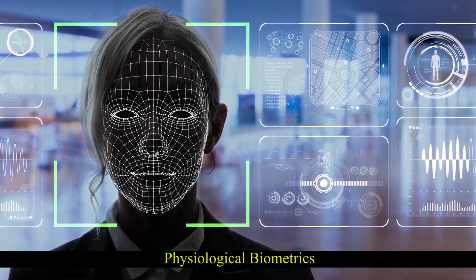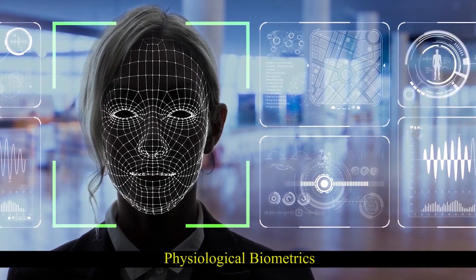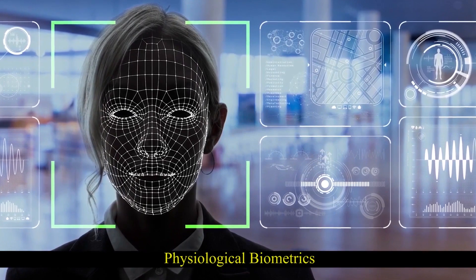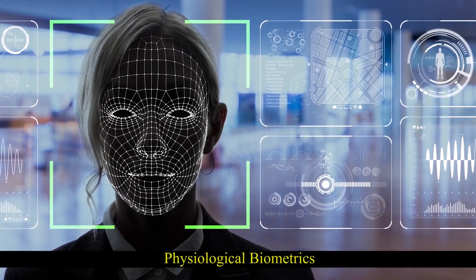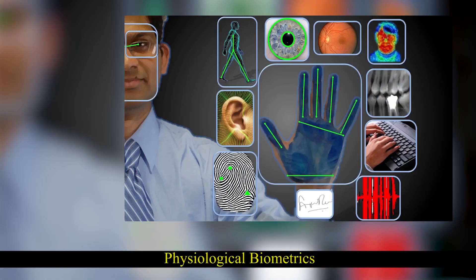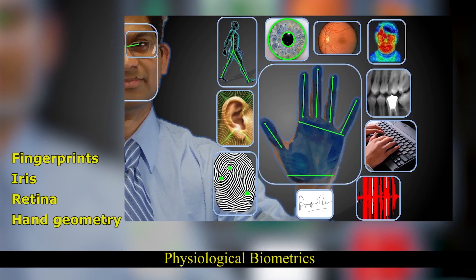Physiological biometrics refers to what the person is — they measure the physical parameters of certain parts of the body. Fingerprints, iris, retina, hand geometry, and face are some examples of physiological biometrics.